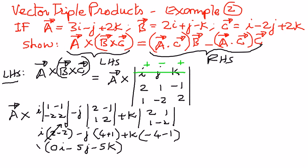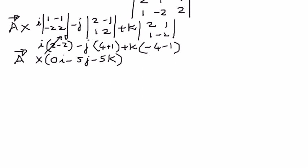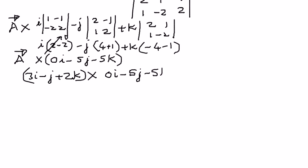We now cross this result with vector a. We set up the determinant with i, j, k in the first row; coefficients of vector a (3, −1, 2) in the second row; and coefficients of (0, −5, −5) in the third row. Expanding along the first row with sign convention positive, negative, positive.